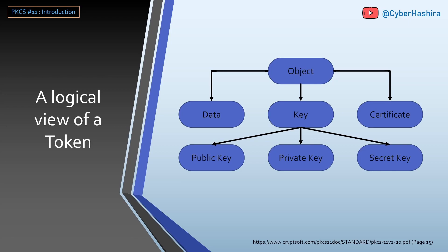Let's talk more about tokens. A token is where all the magic of PKCS#11 happens. All cryptographic operations such as hashing, signing, or encryption happen inside a token. A token also has secure memory where it stores all cryptographic objects. An object in PKCS#11 can be classified as a data object, a key, or a certificate. A key can be a public key, a private key, or a secret key, and all these objects are defined as an object class in PKCS#11.